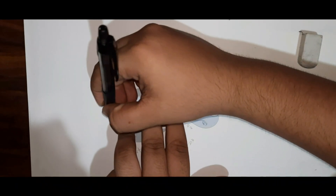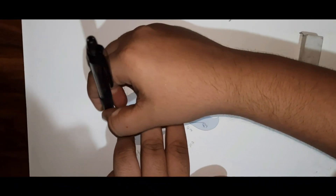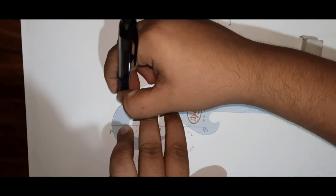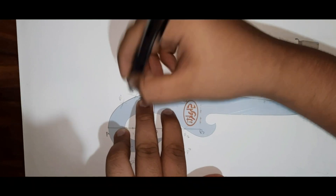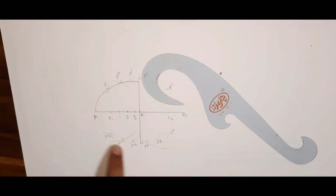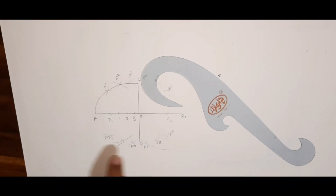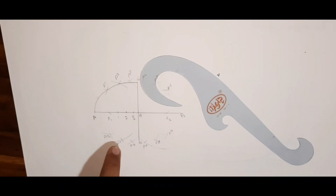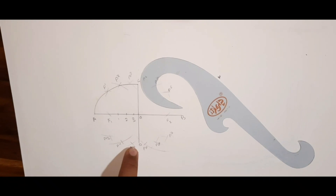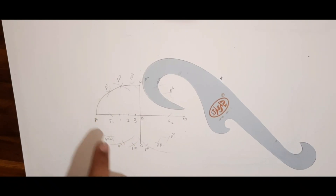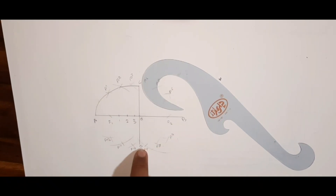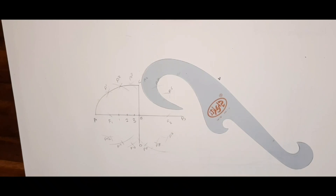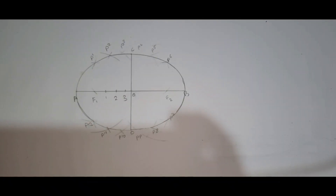First join points A, P1, and P2. Similarly, join all the remaining points P12, P11, P10 to A and D, and all remaining points to their respective points. Here the ellipse is ready.